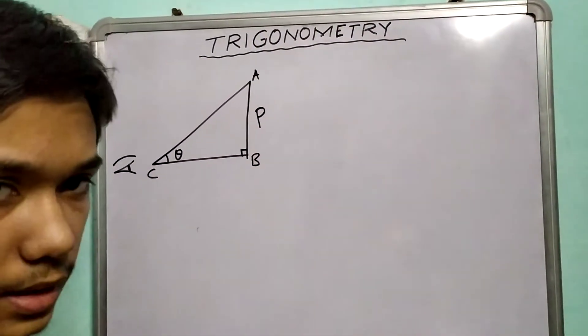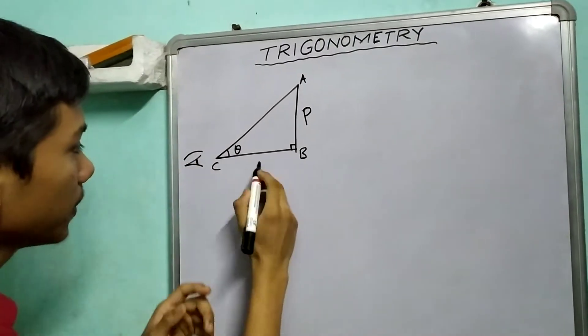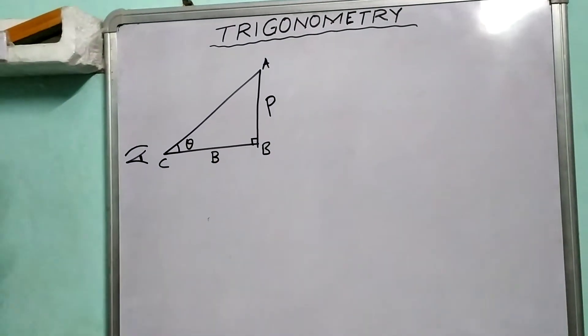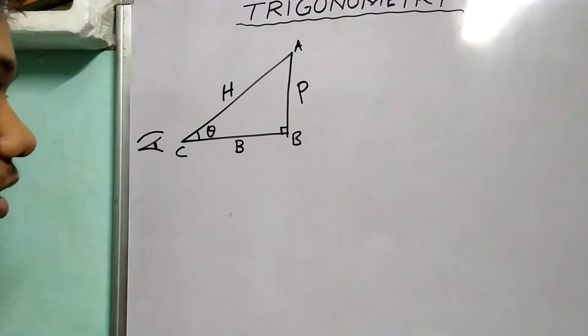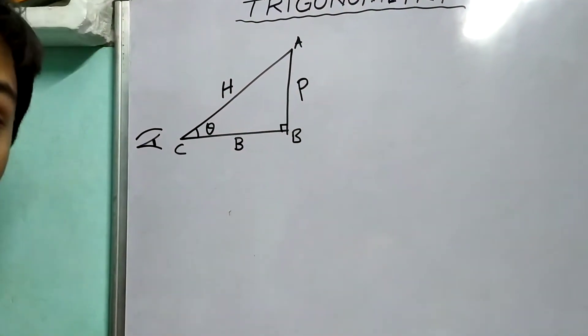And which side will be the base? Clearly, CB will be the base. And of course, the hypotenuse remains the same everywhere, it doesn't change, because it's the longest side of a triangle.